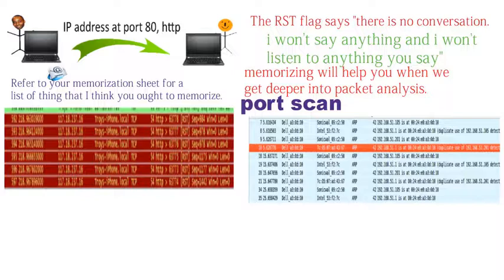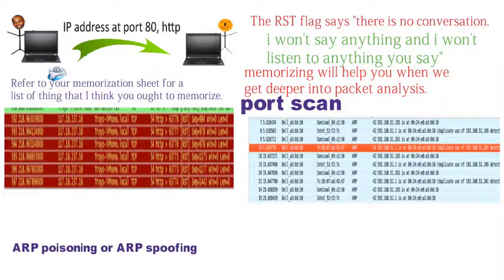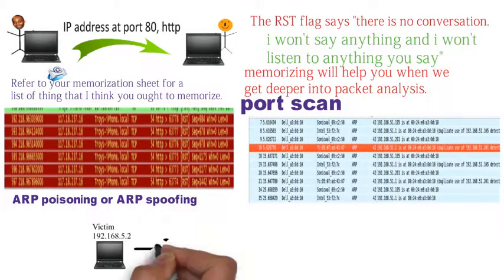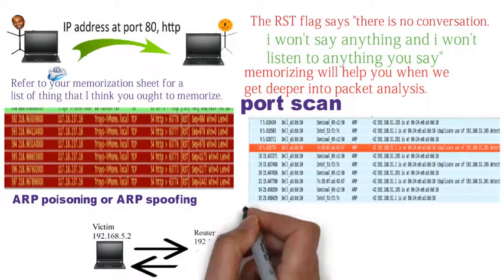Sometimes a hacker will send fake or spoofed ARP messages on the network claiming that their MAC address belongs to another device's IP address, so their target will send their packets to the hacker's device rather than the intended recipient. This hacking technique is called ARP poisoning or ARP spoofing. As an analyst, you'd want to look into something like that.